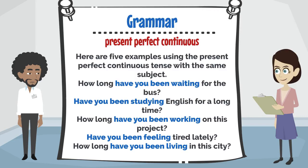Here are five examples using the present perfect continuous tense with the same subject: How long have you been waiting for the bus? Have you been studying English for a long time? How long have you been working on this project? Have you been feeling tired lately? How long have you been living in this city?